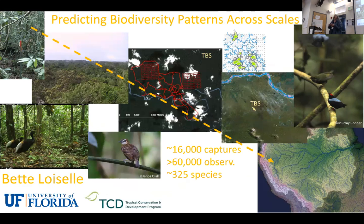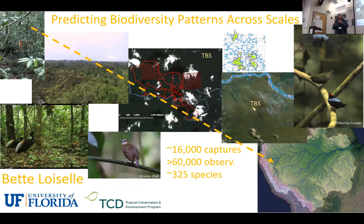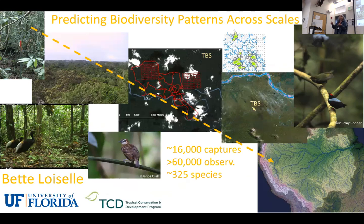One punchline is that biodiversity does matter for seed dispersal processes. When you go from a system that's relatively species-poor in Costa Rica to very species-rich in the Amazon, you increase the redundancy of the function, which should make the system more resilient to loss. Yet even in the Amazon, there are still few quantitatively important dispersers that impact plant populations. When some of these get hunted out — as you see in Western Amazonia, not hunted out completely but with lower abundances — the consequence to plants is truncated long-distance seed dispersal.